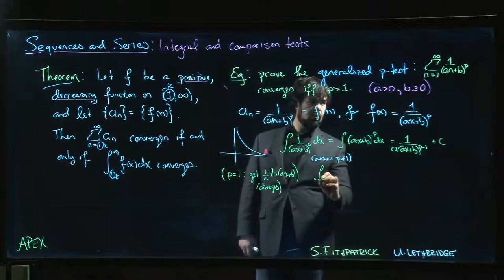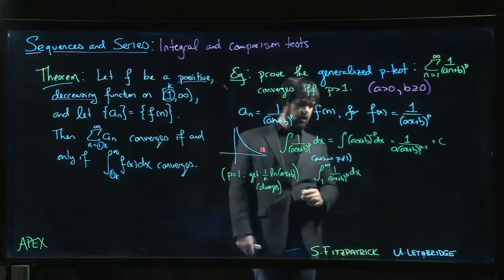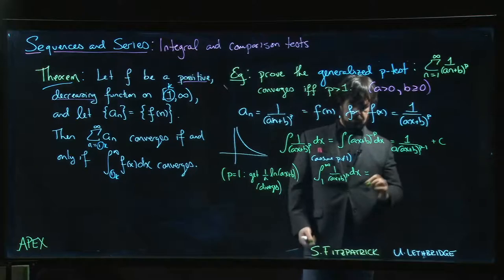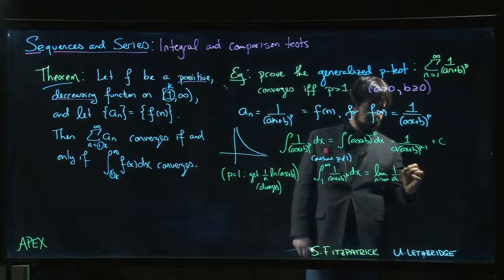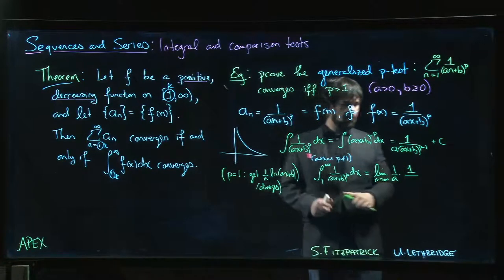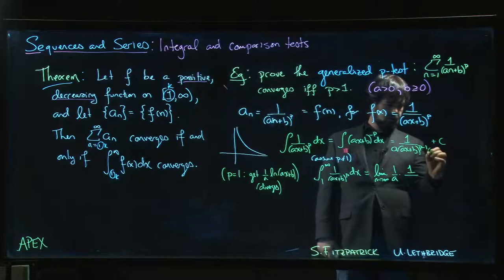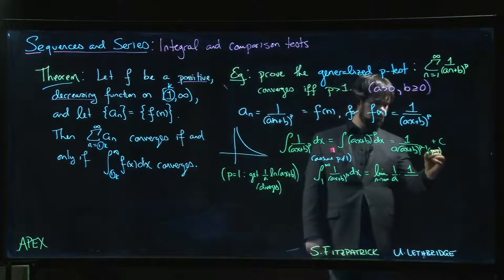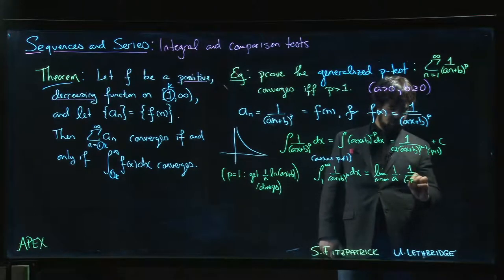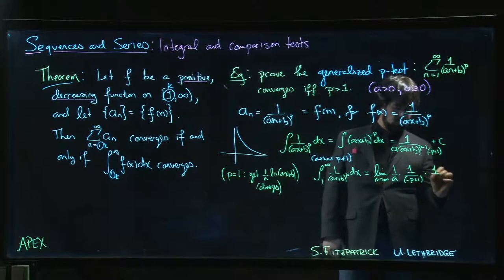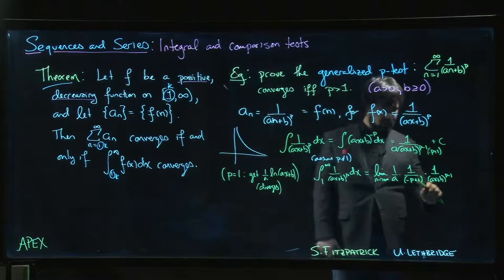And so if we're looking at the improper integral going from one to infinity of 1 over (ax + b) to the p dx, well we're going to get the limit as n goes to infinity, 1 over a times—oh, we also have to divide by the new exponent, so we have (p - 1) in there. So we have that, we have minus p plus one, we have 1 over (ax + b) to the (p - 1)—there's our n.